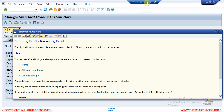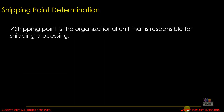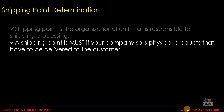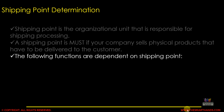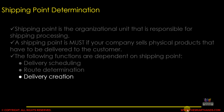Shipping point is the organizational unit that is responsible for shipping processing. A shipping point is required if your company sells physical products that have to be delivered to the customer. The following functions are dependent on the shipping point: delivery scheduling, route determination, and delivery creation. In order to complete these three activities, the system must have a shipping point for the order line item.